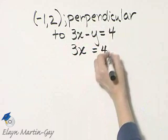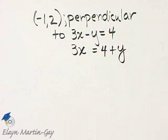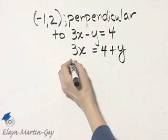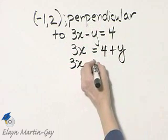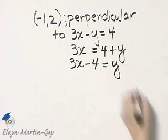if I add y to the right side, 4 plus y, and now I'll subtract 4 from both sides, I'll have 3x minus 4 is equal to y.